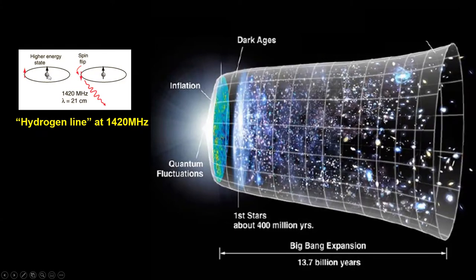When they are spinning in the same direction you have a higher energy state than when you're in a lower state with lower energy. When there is a flip from the high to the low energy state, the hydrogen atom emits a photon.